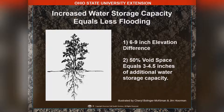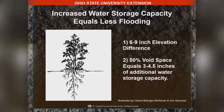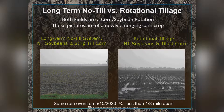This becomes really important not only in the middle of a drought, but when we have rains — having less storage capacity means we're more susceptible to flooding. Having that extra storage capacity in virgin soils equals less flooding. We can also take a look in northwest Ohio. This picture was taken several years ago on a Hoytville clay soil, comparing long-term no-till soils to rotational tillage.